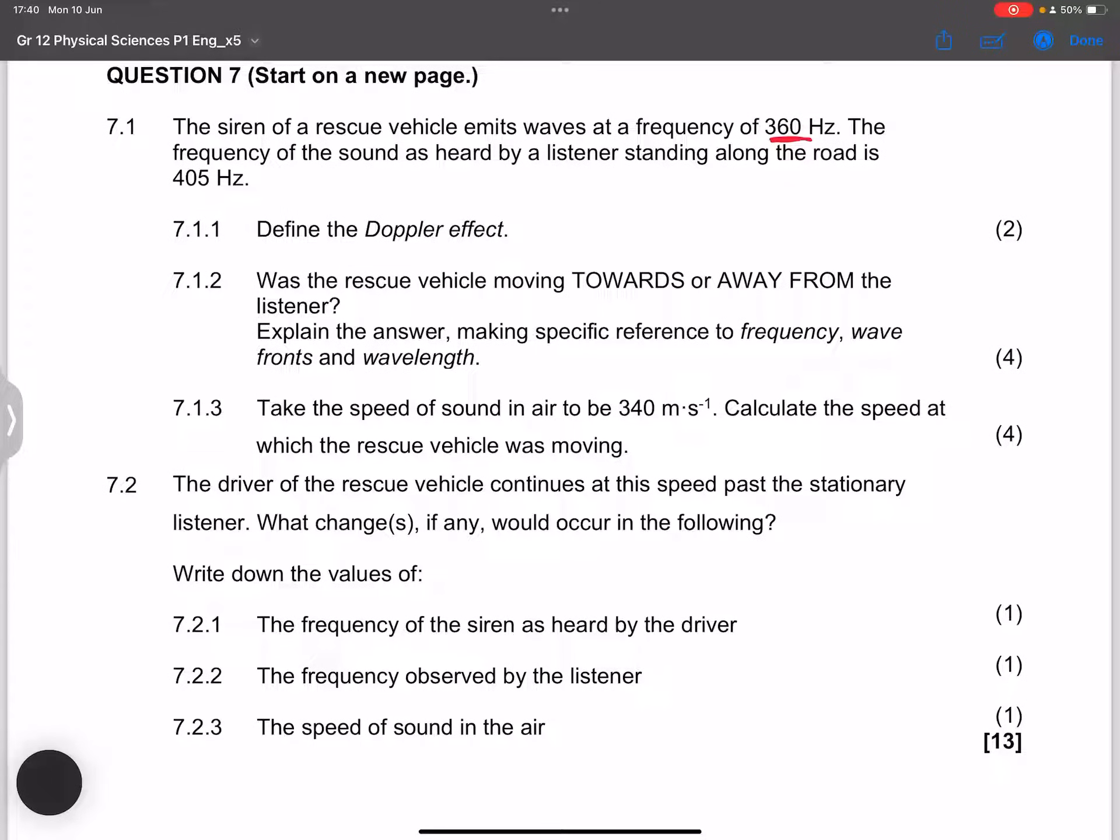The frequency of the sound as heard by a listener standing along the road is 405. So we notice there that the detected frequency is higher than the emitted waves. So that does tell us that the rescue vehicle is moving towards the listener.